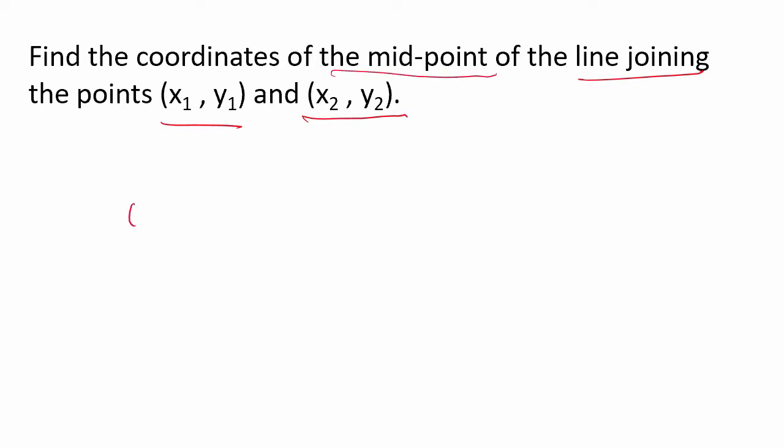If I draw, suppose this is how the line is - one point is (x₁, y₁), another point is (x₂, y₂). It is asking us to find - suppose this is one point, this is the other point, draw a line like this. It is asking us to find the midpoint. So, this is the midpoint.